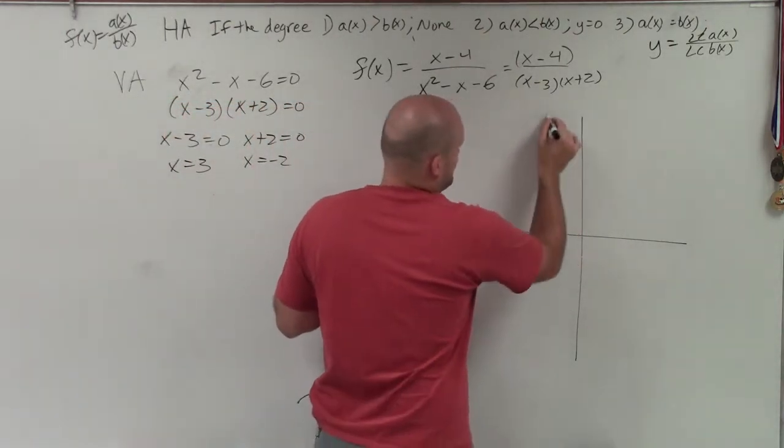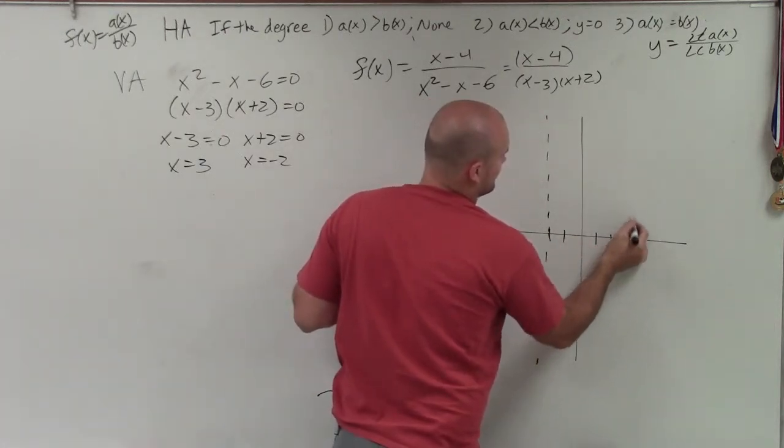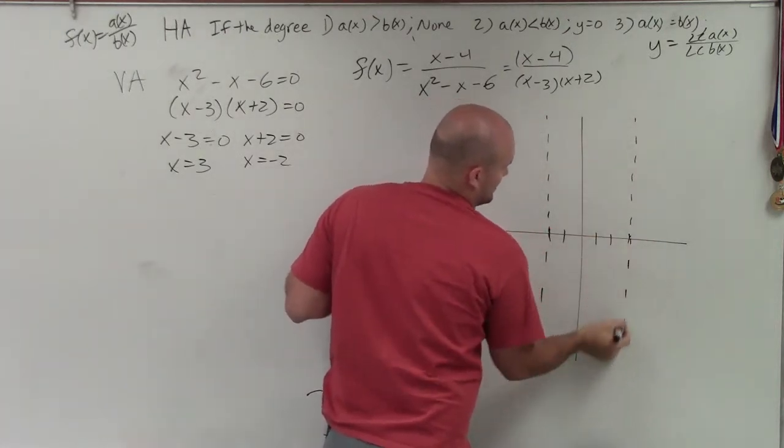So I go to negative 2, 1, 2, and I draw a nice asymptote. Then I go to positive 3, 1, 2, 3, and I draw a nice asymptote.